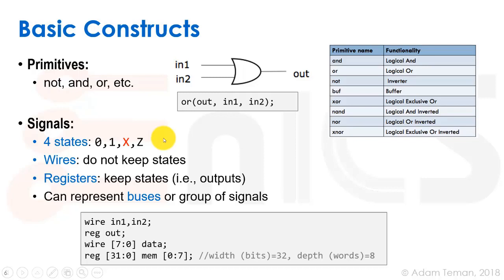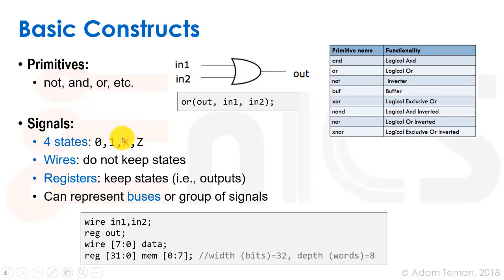We have signals like in1, in2, and out. Since they're logic signals, they can have four primary states. There are more things in Verilog, but they're not synthesizable. The four states are: 0 (logic 0, ground voltage), 1 (logic 1, VDD voltage), x (unknown — either uninitialized or an error, shown in red in many simulators), and z (high impedance), meaning something else can be driven onto the signal.